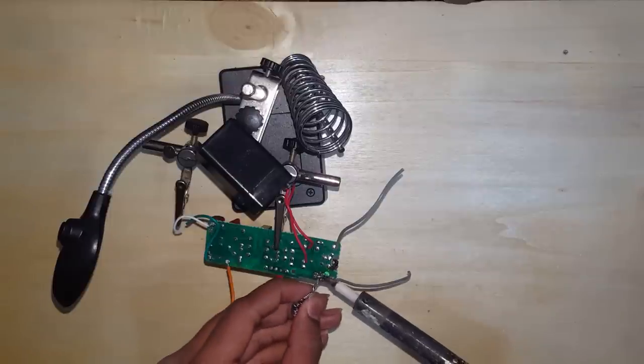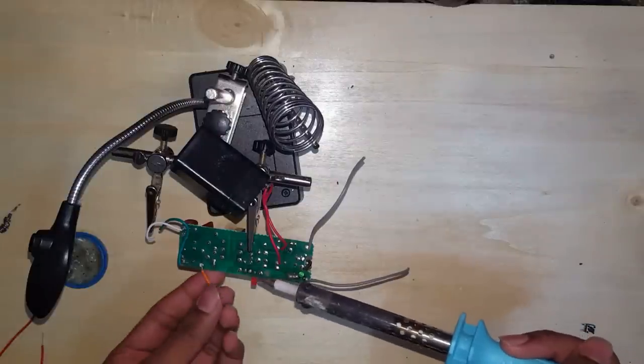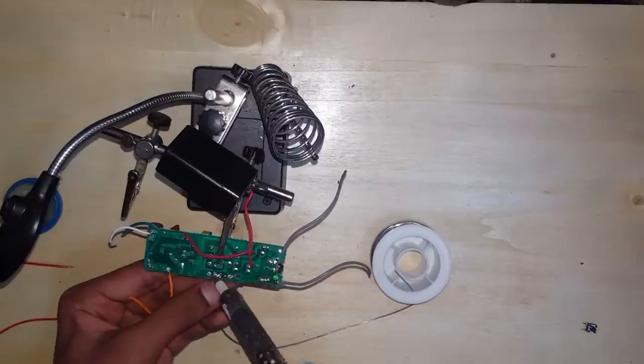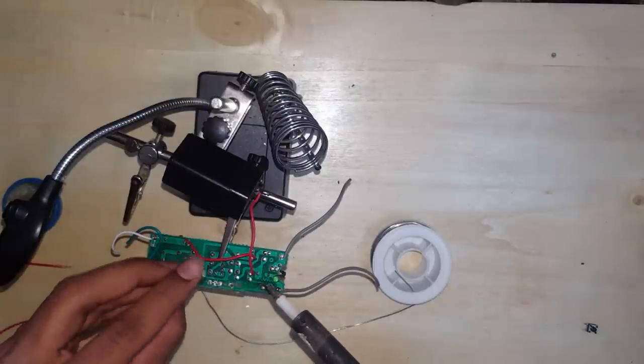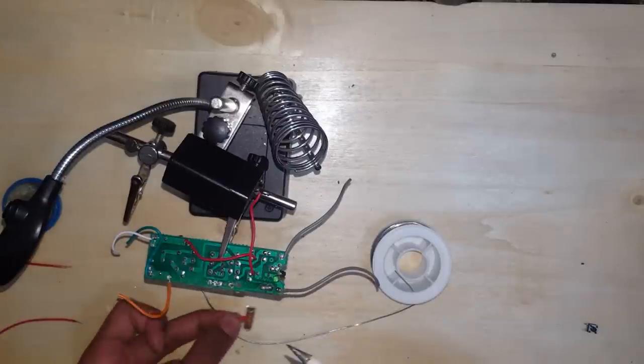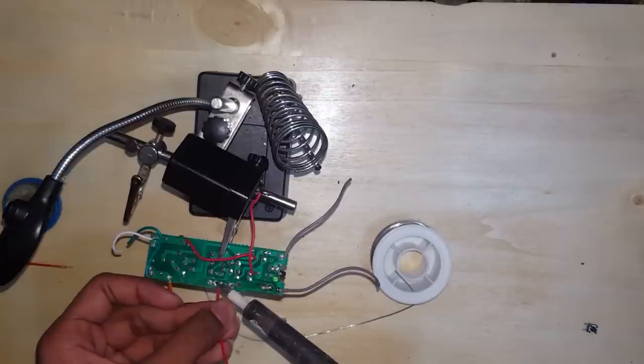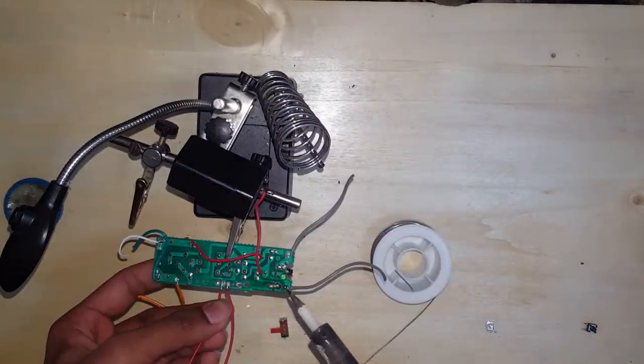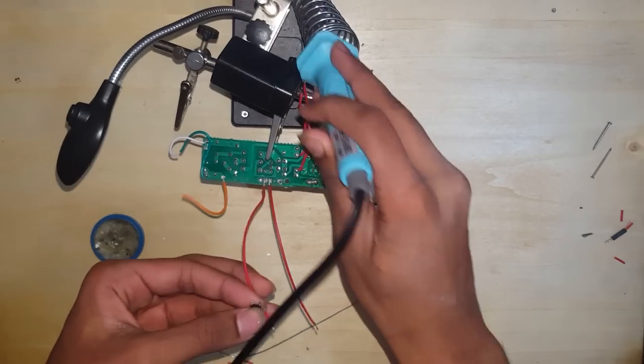After that, you're gonna desolder the switch over here. Keep the switch for future projects; we won't be needing it for this one. Now you're gonna take a wire and solder it over there, and do the same with another wire. Then take the tactile switch and solder it to the other ends of these two wires.